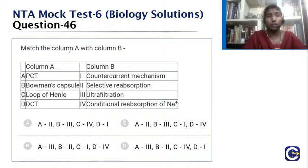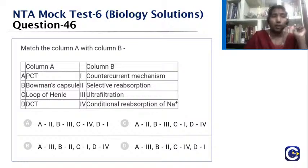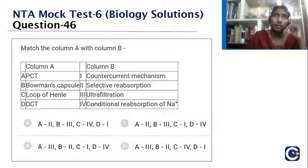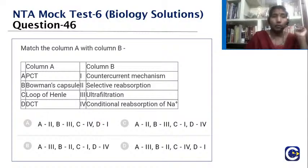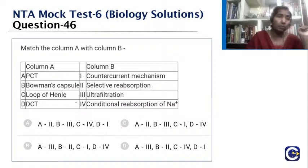The first question is: match column A with column B. Column A has PCT (proximal convoluted tubule), Bowman's capsule, loop of Henle, and DCT (distal convoluted tubule). Column B has counter-current mechanism, selective reabsorption, ultrafiltration, and conditional reabsorption of sodium. The options give different matching pairs.